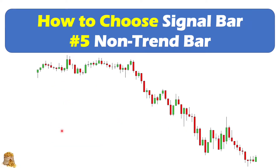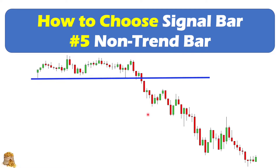Here is an example. In this chart, we can see we have a level and then it's breaking this level. We'll wait for the pullback and then the signal bar. Here comes the first bar. This bear bar — you can see the body accounts for 58% of the whole candlestick.